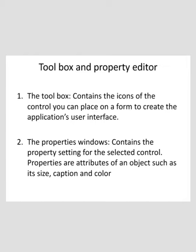To place a control on a form, you first select it with the mouse and then move the mouse over the form. The cursor turns into a cross and you can draw the control on the form. In addition to the default toolbox, you can create custom layouts by right-clicking the toolbox and selecting Add Tab from the shortcut menu.